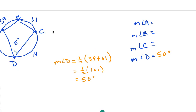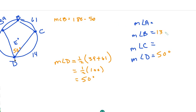So we know angle D is 50 degrees. Angle B is opposite angle D in the quadrilateral, which makes those two angles supplementary. So the measure of angle B is going to be 180 minus 50, which gives us 130 degrees.